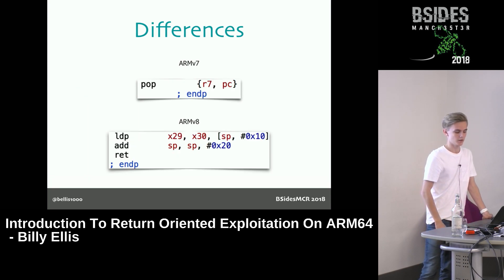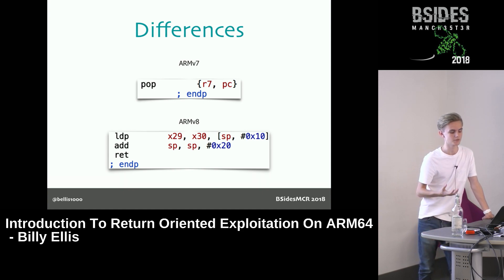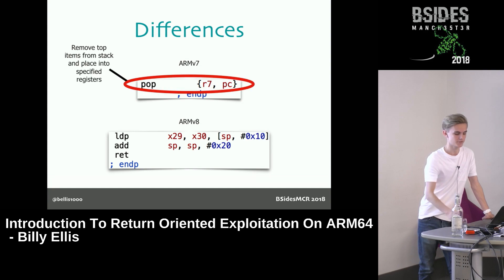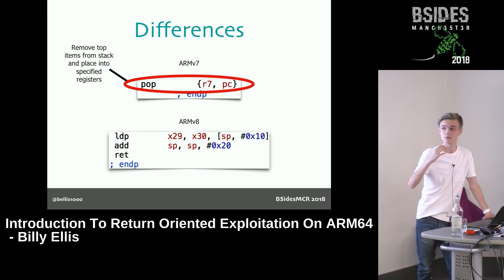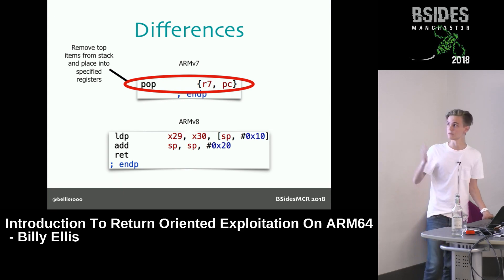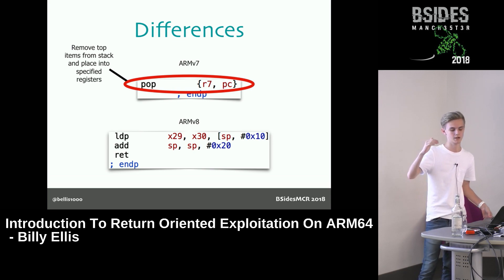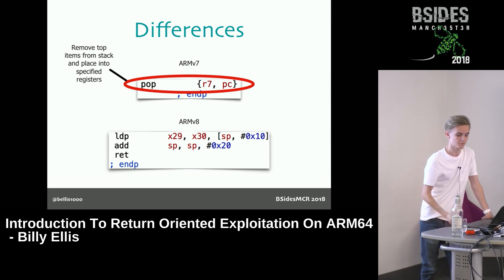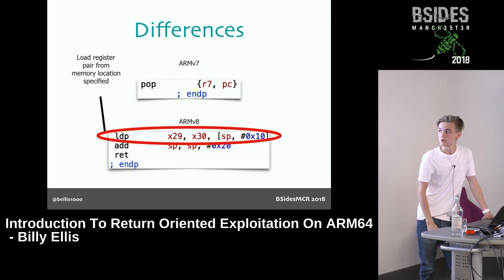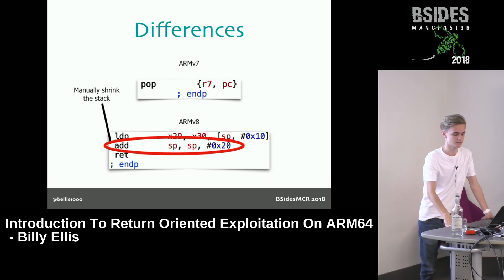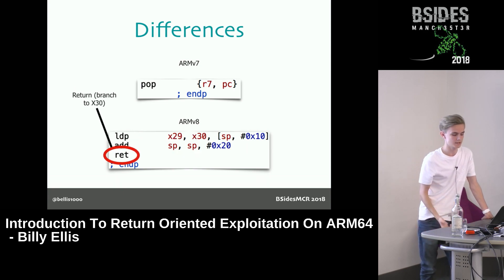The same goes for removing items from the stack, which also ties in with returning from functions. With ARMv7 we just have a POP instruction, which pops values from the stack into registers. Since you can directly access the program counter in ARMv7, popping the return address directly into R15 is sufficient to return. With ARMv8 we have three instructions: LDP to load a pair of registers — X29 and X30 — from the stack, then manually shrink the stack by adding to the stack pointer, then RET which branches to X30 that we just loaded with LDP.